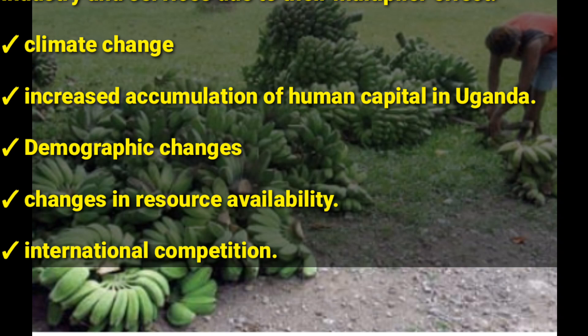Those are some of the reasons why agriculture's share of GDP in Uganda has reduced. Though it has reduced, it does not mean that people are producing less than before. It is just that the industry and service sectors are now producing more than the agriculture sector.